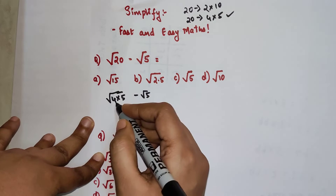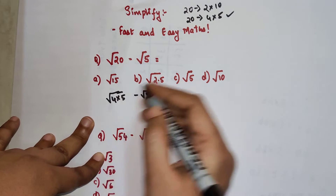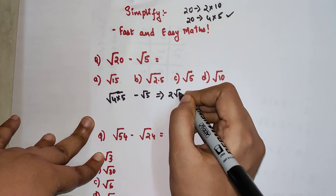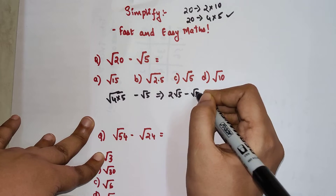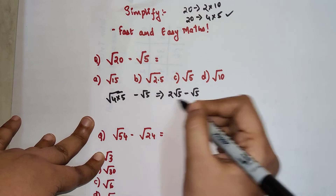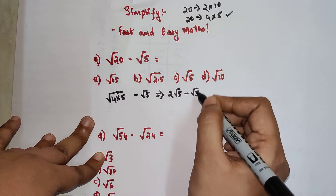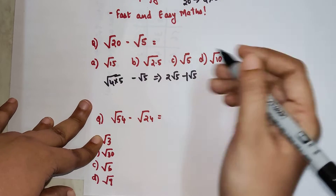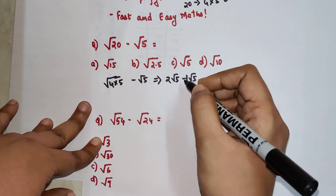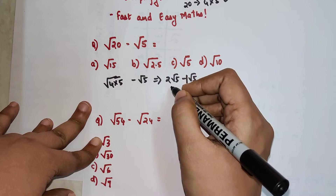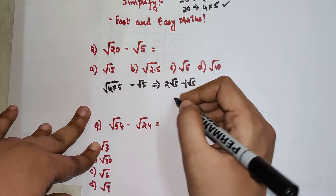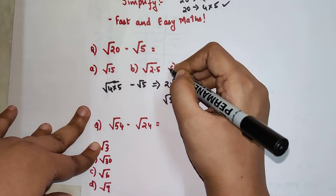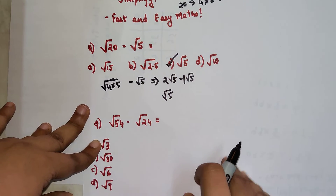The perfect square can be taken outside. So here I will have 2 root 5 minus root 5. Please understand there is no number in front of this root 5, so we know it is nothing but 1. So 2 root 5 minus 1 root 5 will be nothing but root 5. So option C is my answer.